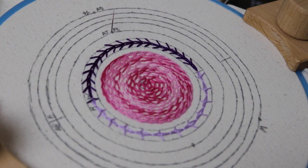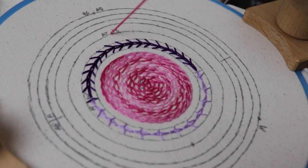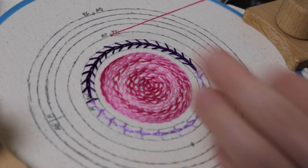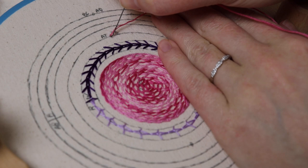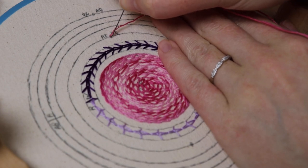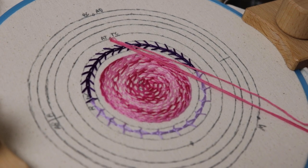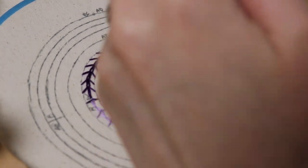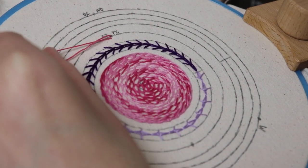We're going to start out with just plain old twisted chain stitch. For this you're going to start by coming up on the line and then you're going to go back down a little bit off the line. You can do either side that you want. I'm going towards the inner side of the circle, but you really only want to be a couple millimeters away. If you go too far away you're moving into barred chain stitch and that's a whole different thing.